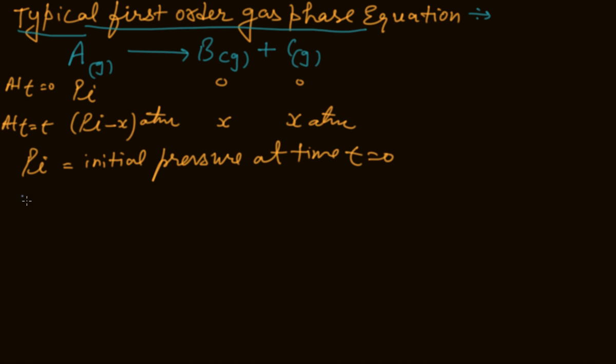Now what is PT, total pressure? PT is equal to Pi minus X plus X plus X. One X we will cancel with another. This X cancels with this one. So finally, PT equals Pi plus X.